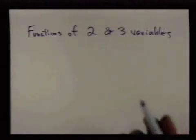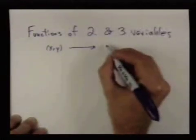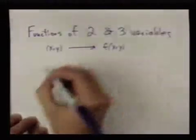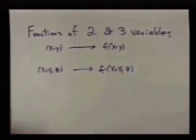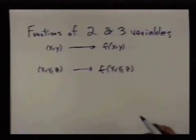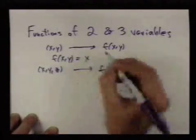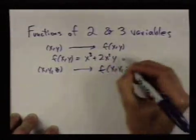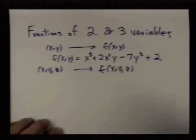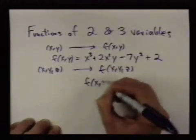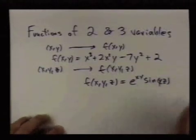All right, so a function of two or three variables is just a way of assigning either ordered pairs to a real number, or a way of assigning an ordered triple to a real number. We usually use formulas to define such functions. For example, I could write down a function of two variables. I could have x cubed plus 2x squared y minus 7y squared plus 2. That's an example of a polynomial of two variables. And I could write down a function of three variables using a formula. That's mostly what we'll be doing.